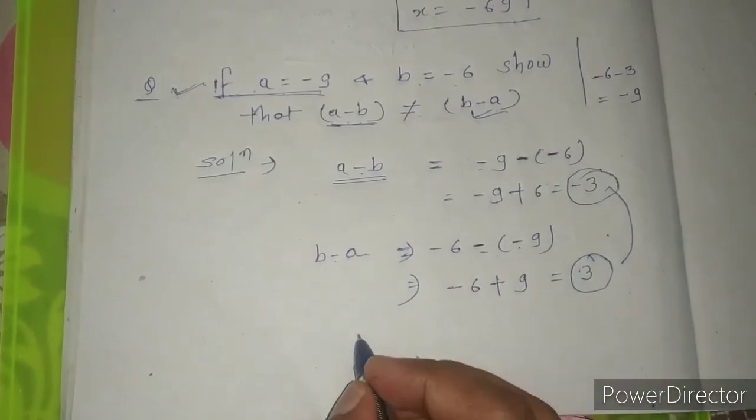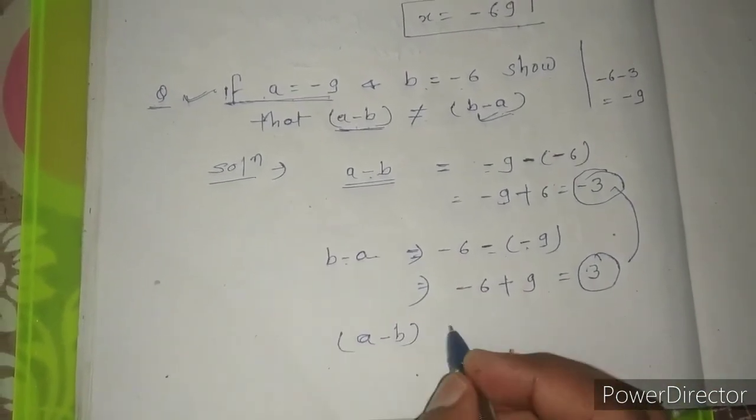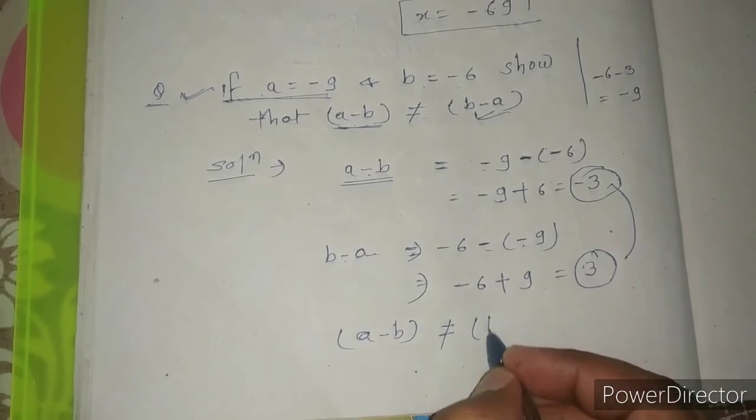Now this is minus 3 and this is 3, so they are not equal. That means we can say that a minus b does not equal to b minus a.